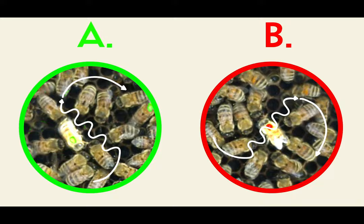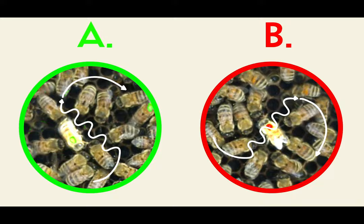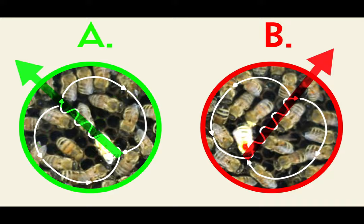While both sets of bees perform the classic figure eight dance, the orientation of the dances is offset between the two groups. Bees returning from one feeder perform a rotated version of the dance done by the other bees.